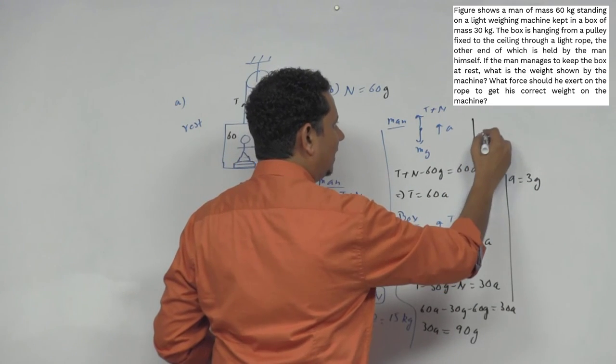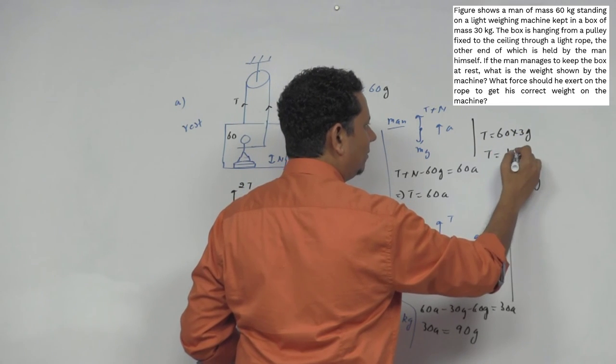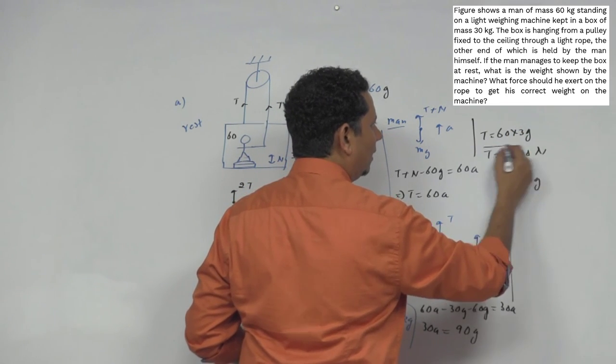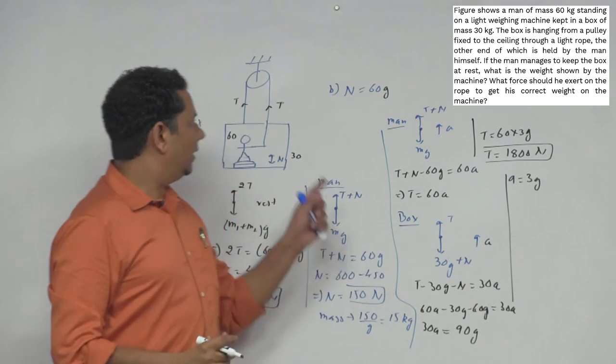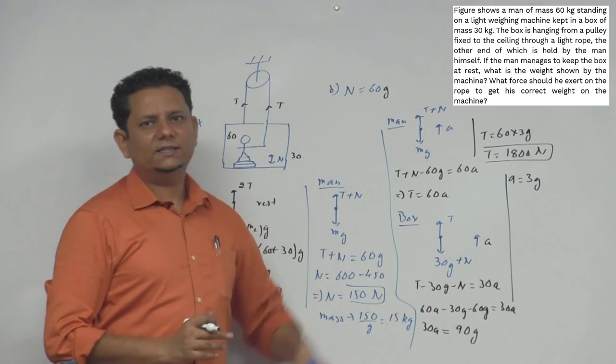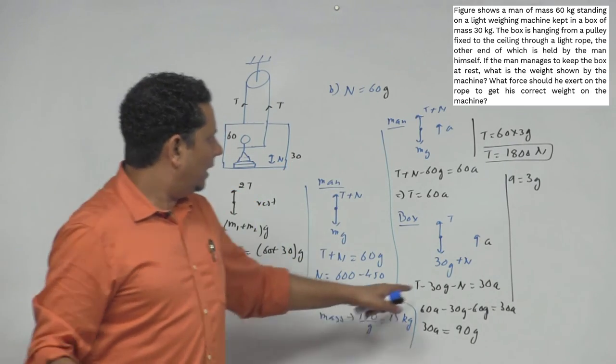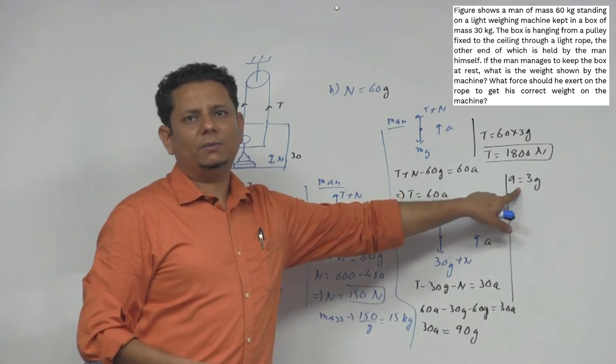Therefore, T will be equal to 1800 Newtons. This is the final answer for how much force is needed so that the weight shown is exactly the same as the original 60 kg. In that case, you have acceleration equal to 3g.